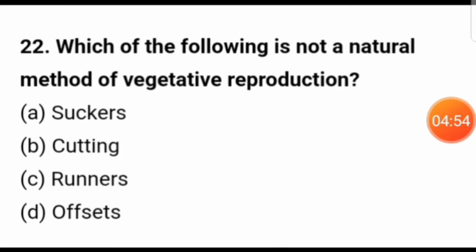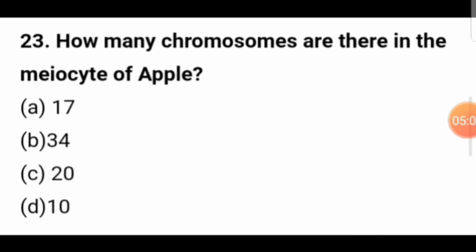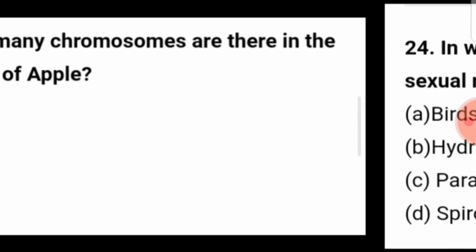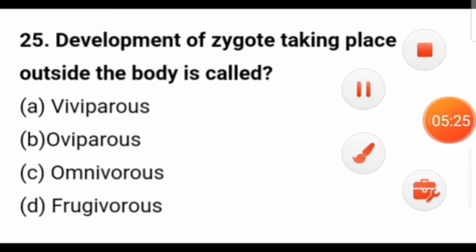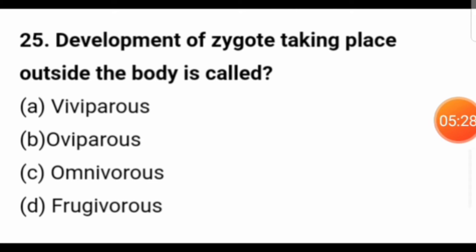Which of the following is not a natural method of vegetative reproduction? The answer is cutting — cutting is not a natural method. How many chromosomes are there in the meiocyte of apple? In the meiocyte of apple, there are a total of 34 chromosomes. In which animal does conjugation occur as sexual reproduction? Conjugation occurs as sexual reproduction in paramecium. Development of a zygote taking place outside the body is called oviparous.